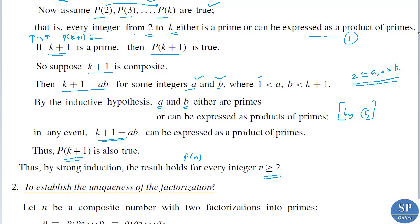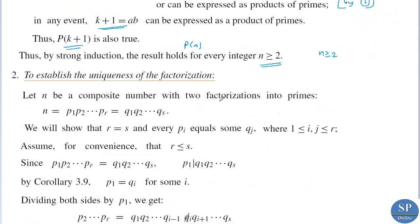The second part is to establish the uniqueness of the factorization. We have proved that any integer n ≥ 2 either is a prime or can be expressed as a product of primes. Now we have to show that factorization is unique. Let n be a composite number with two factorizations into primes: n = p₁·p₂·…·pᵣ = q₁·q₂·…·qₛ. Suppose there are two such factorizations; we will show that they are the same by showing r = s and every pᵢ equals some qⱼ.